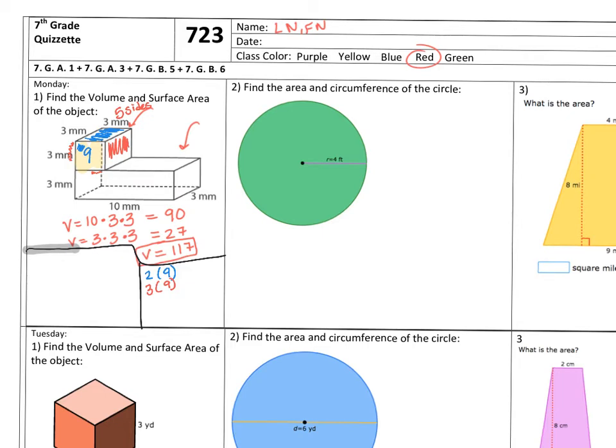So you have three sides that are 3 by 3, which 3 times 3 is 9. So technically, you're only covering five sides of that object, not six. Because the sixth side of that cube is covered by the base of the bottom. So we have 2 times 9, or you could just do 5 times 9. 5 times 9 is 45. So 45 is the surface area, millimeters squared.